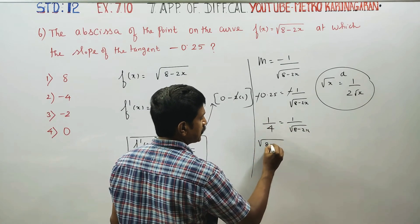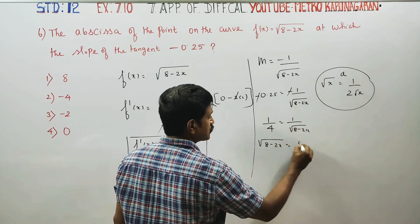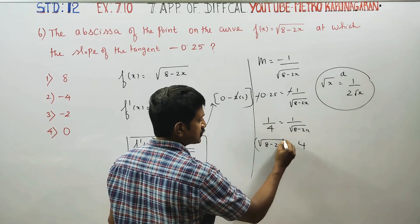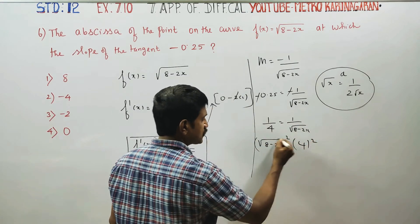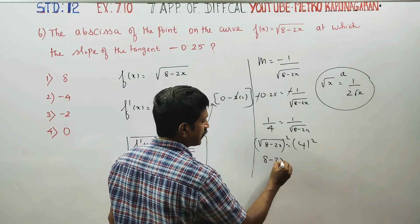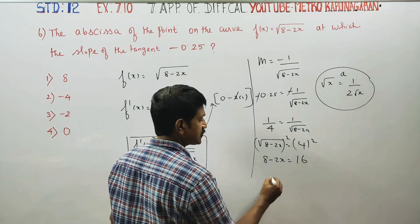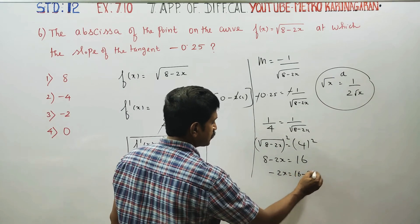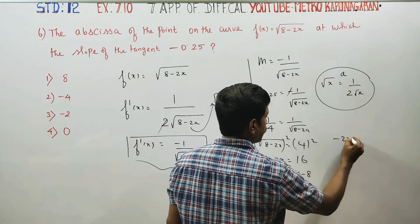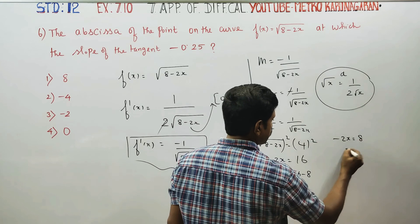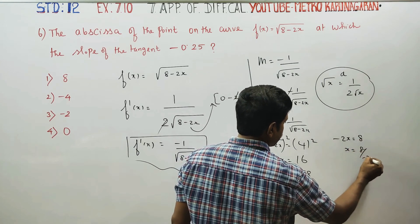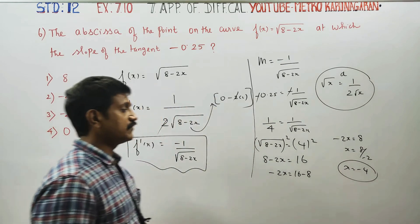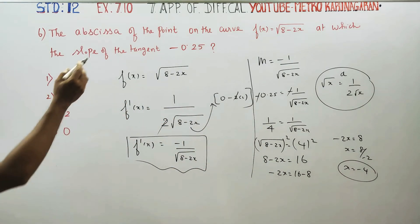Therefore, root of 8 minus 2x equals 4. Squaring both sides, the square root cancels: 8 minus 2x equals 16. So minus 2x equals 16 minus 8, which gives minus 2x equals 8, and therefore x equals 8 divided by minus 2.